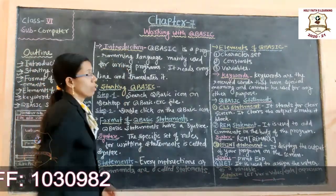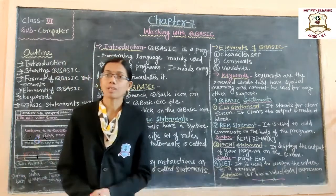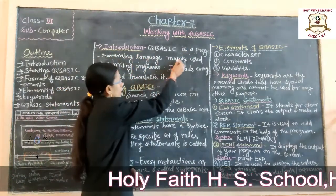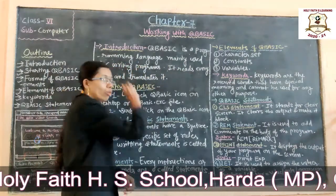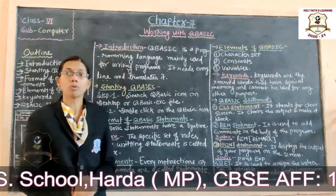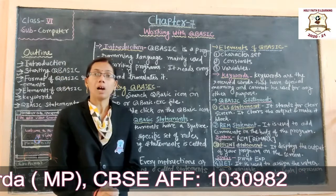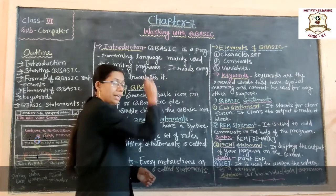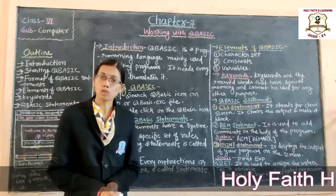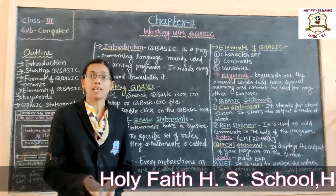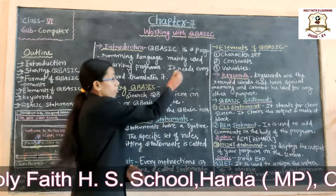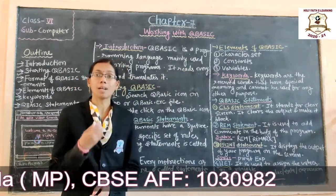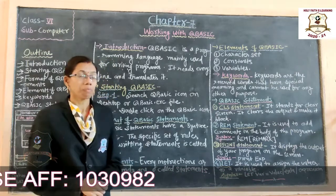The first topic is introduction. Q-Basic is a programming language mainly used for writing programs. How does it work? It reads every line and translates it — that is the working of Q-Basic. It reads every line, translates it, and then the computer executes it line by line.